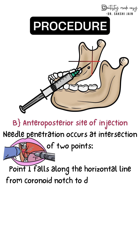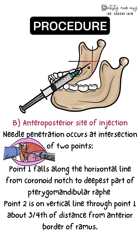The second parameter is the anterior-posterior distance. The needle penetration should occur at the intersection of two points: point one is on the horizontal line from the coronoid notch to the deepest part of the pterygomandibular raphe; point two is on a vertical plane through point one, at approximately three-fourths of the distance from the anterior border of the ramus. In the diagram, the horizontal line is drawn from the coronoid notch to the pterygomandibular raphe, and the vertical line is at three-fourths of the distance from the anterior ramus — their intersection is the anterior-posterior target.